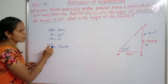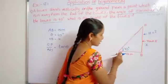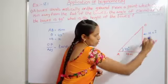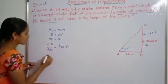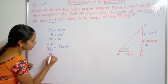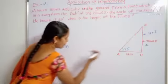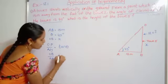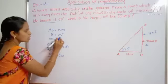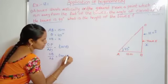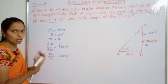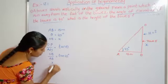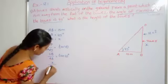By using this formula we can find the height of the tower. Here the angle is 45 degrees, so the opposite side is OB and the adjacent side is AB. Therefore, OB by AB equal to tan of theta, which means 45 degrees. OB we don't know, so OB equal to X, and AB value is 15 meters.